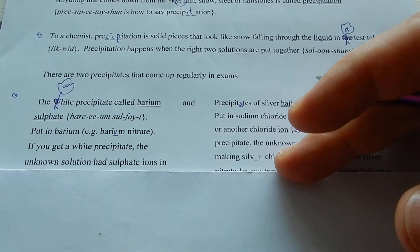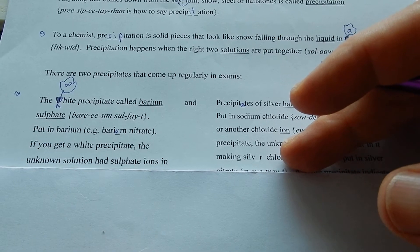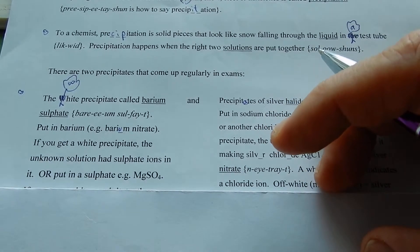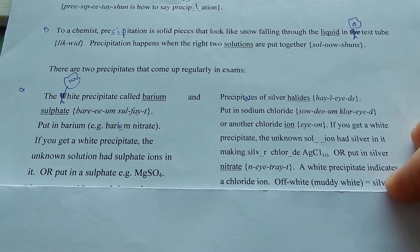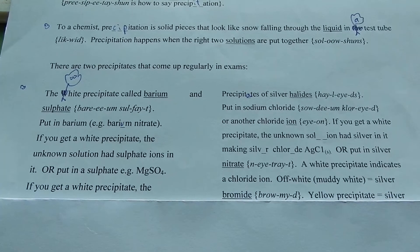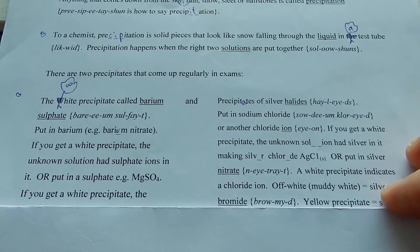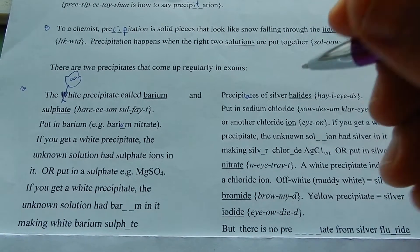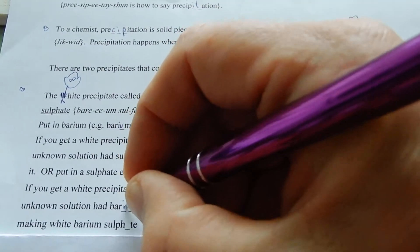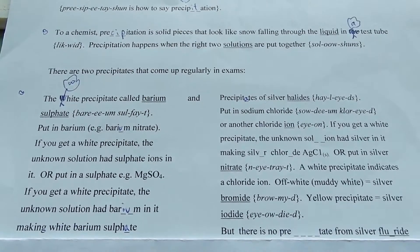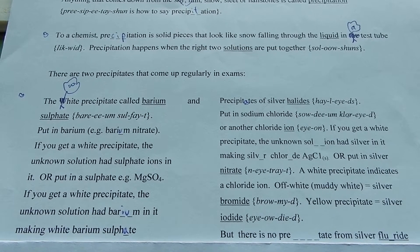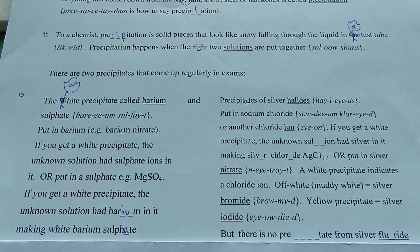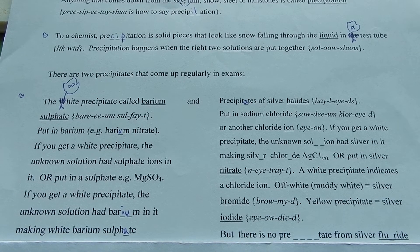If you get a white precipitate, the unknown solution had sulfate ions in it, or put in a sulfate, e.g., magnesium sulfate. If you get a white precipitate, the unknown solution had barium in it, making white barium sulfate. So a white precipitate either tells you there's barium there if that was a mystery, or there's a sulfate there.